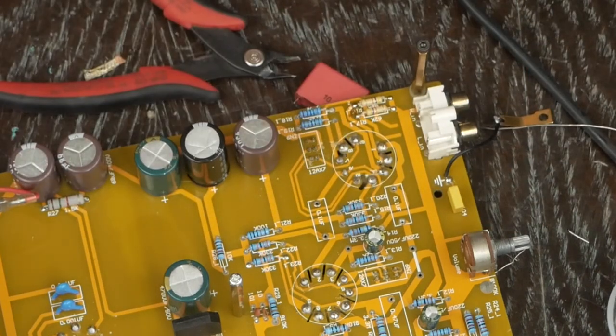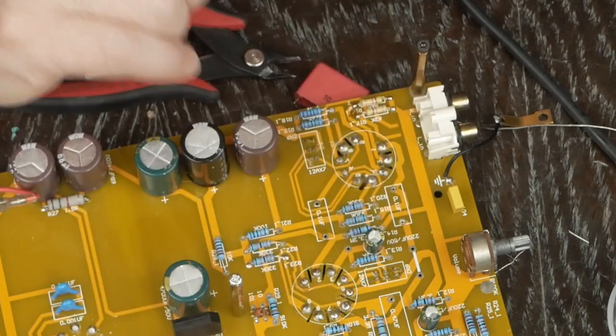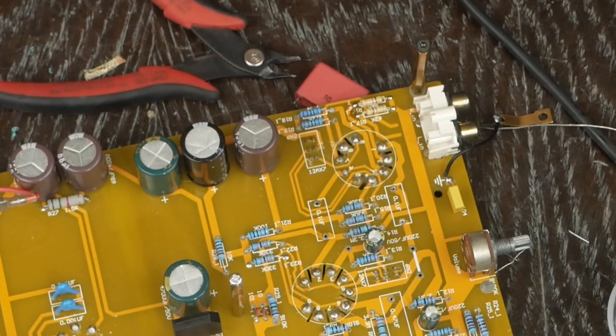We're going to go ahead and solder these two capacitors in and then I'm going to take a short break and study the circuit board and figure out exactly where we want to put the other capacitors. Actually, let me stop a minute. I'm going to figure out which direction these caps need to go in and which ones need to go where and maybe put a fresh set of batteries in the camera and we'll come back and finish this up.